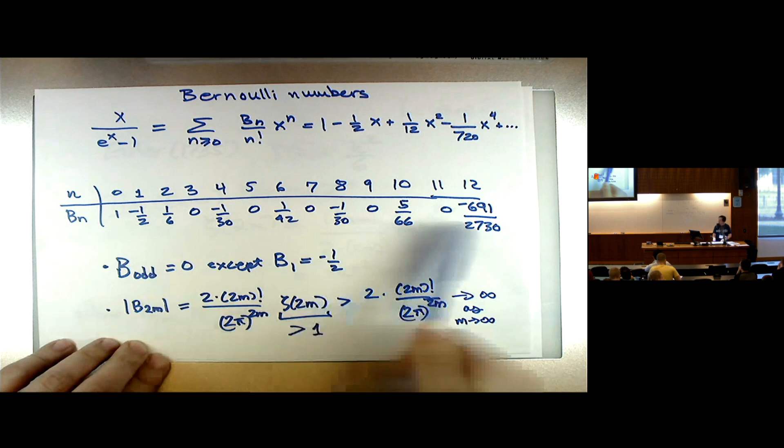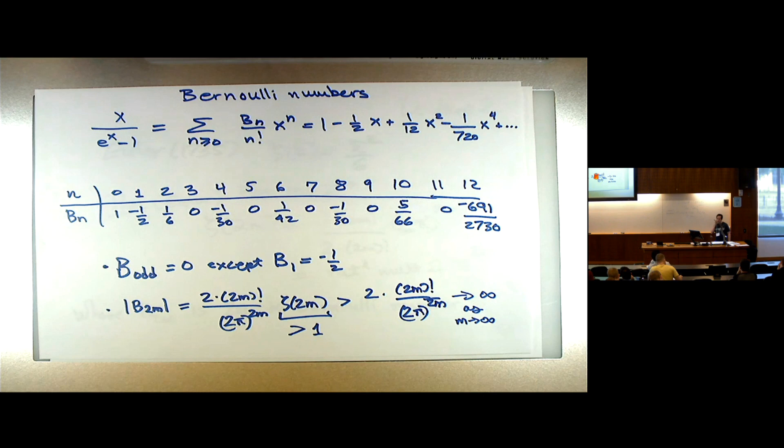So despite the initial appearances, the Bernoulli numbers will eventually get quite large. I think b_{14} in magnitude will be bigger than 1, but they will eventually get quite large.